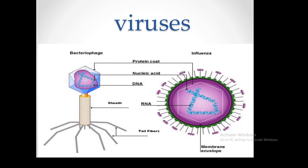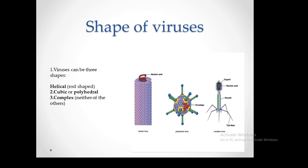Before we go to the action of viruses, let's take a look at the shapes of viruses. Viruses can be three shapes: helical, which is a rod shape; cubic or polyhedral; and complex. The complex type consists of a capsid, nucleic acid, sheath, and tail fiber. The polyhedral type has an envelope, and the helical virus contains nucleic acid.